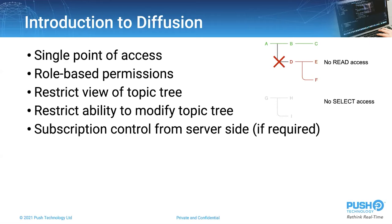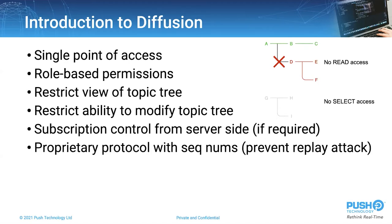Another core feature in Diffusion is its ability to control client subscriptions from the server side. Subscriptions can be switched on and off on demand programmatically, for a single client or groups of clients. Furthermore, all client-server communication with Diffusion is via proprietary protocol, including sequence numbers, which prevents replay attacks. Replay attacks can't happen because the protocol is proprietary and the sequence numbers ensure it never happens.